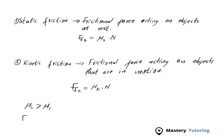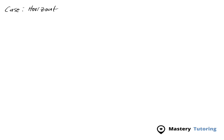This means FF_S is always greater than FF_K. Now let's look at two cases in which you would be expected to calculate friction. Case one is for a horizontal surface — the object is moving on a horizontal surface.